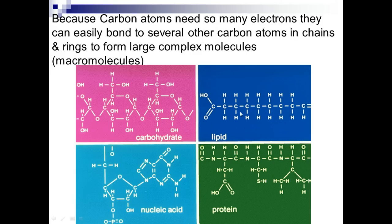We've got a protein with the NCC backbone that repeats over and over. Here's the R group — the residue group — and different R groups make different amino acids. When those amino acids come together, we get the polymer we call a protein or polypeptide. Here we've got nucleic acid — you can see some nitrogens, a sugar or carbohydrate, and a phosphate group, plus an individual nucleotide just below. We'll talk more about that soon.